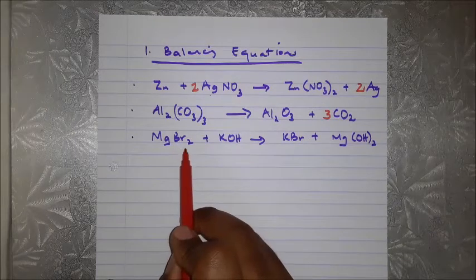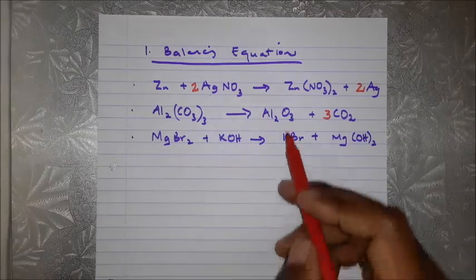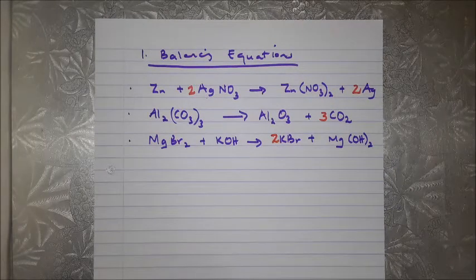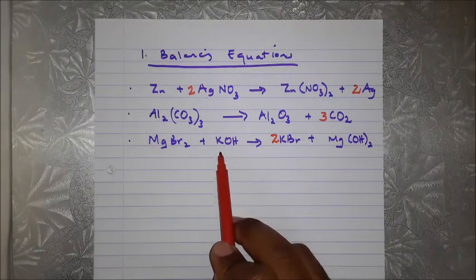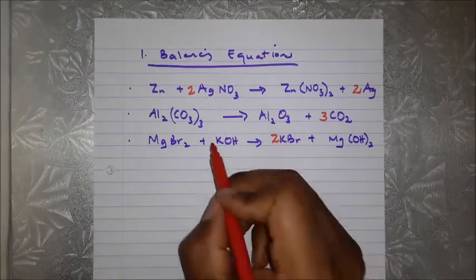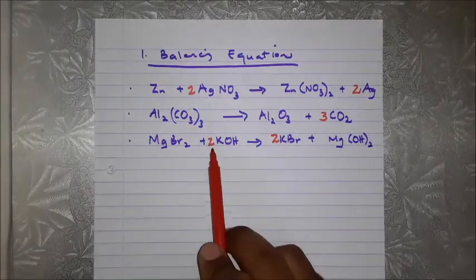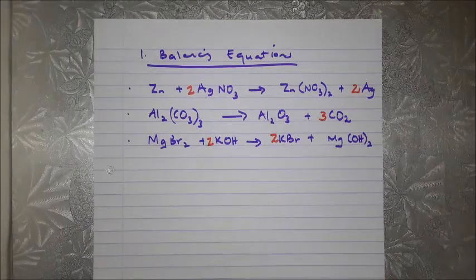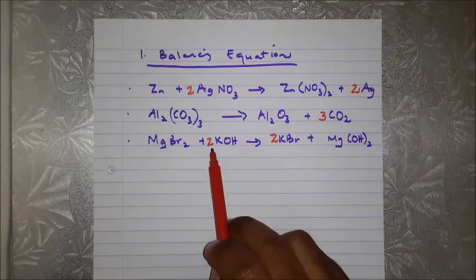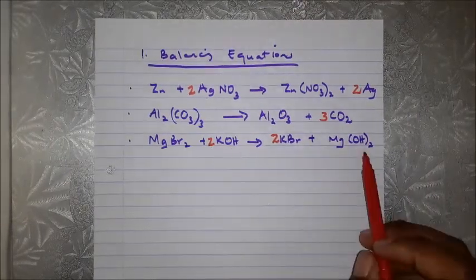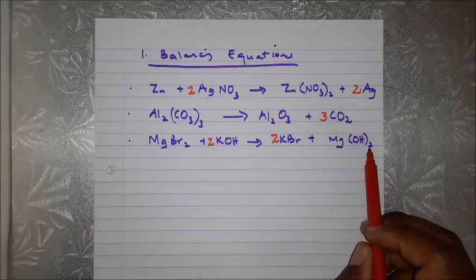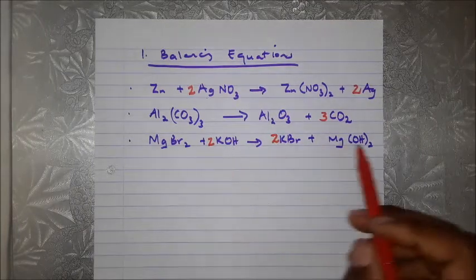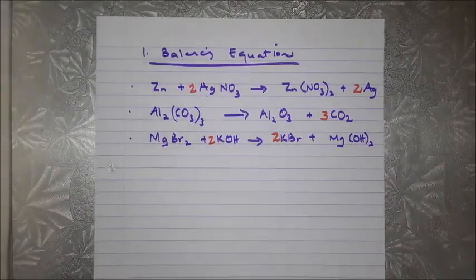For bromine: there are 2 on the reactant side but only 1 on the product side, so we put a 2 in front of KBr. For potassium: 1 on the reactant side but now 2 on the product side, so we put a 2 in front of KOH — giving 2 potassiums on each side. Oxygens: 2 on each side — done. Hydrogens: 2 on each side — done. This equation is balanced.